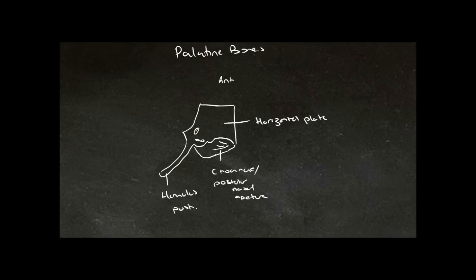We have two sets of foramina: we have the greater palatine foramen and the lesser palatine foramen. These are for the greater and lesser palatine nerves as well as the vessels.